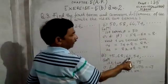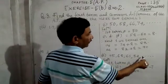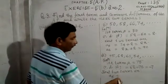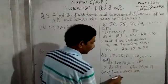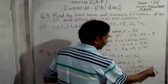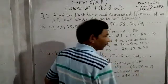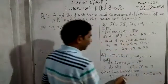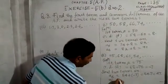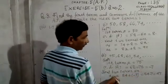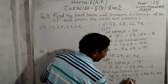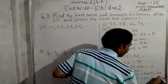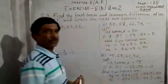We have A1, A2, A3, A4 and need A5 and A6. A5 equals A4 plus D, so 54 plus minus 7. That gives 54 minus 7, which equals 47. Then A6 equals A5 plus D, so 47 plus minus 7 equals 40. These are the next two terms.